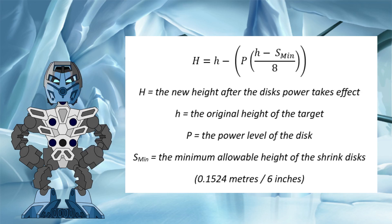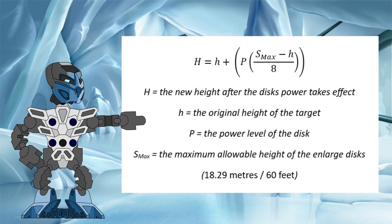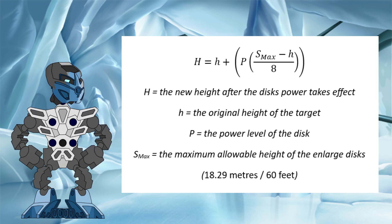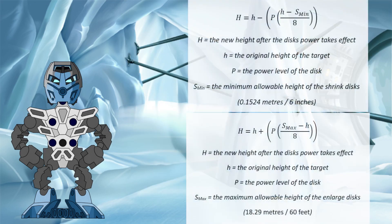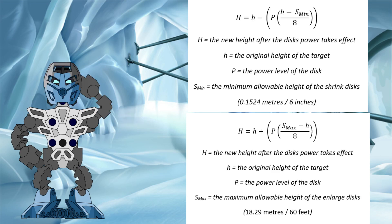The equation for the enlarged discs is much the same, only the new height factor needs to be added to the original height rather than taken away. And the maximum height, or S max, needs to have the original height taken away from it as part of that new height factor, rather than the other way around as in the shrink disc. What I think is really cool about this is that it lets you figure out the exact effects of these two discs for anything with a known height in all of Bionicle, which is why I'm now going to let you all try it.